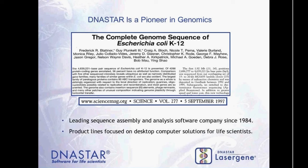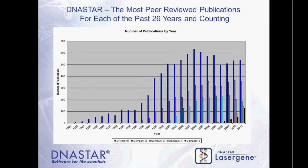We're expanding soon to the cloud, so there will be additional options for people who'd like to do their analysis there. Our software is research-grade — people use it and publish with it. Dating back to 1985, DNA Star has been the most frequently cited bioinformatics software for over 25 years, reflecting a long history of producing powerful, well-supported software for scientists.